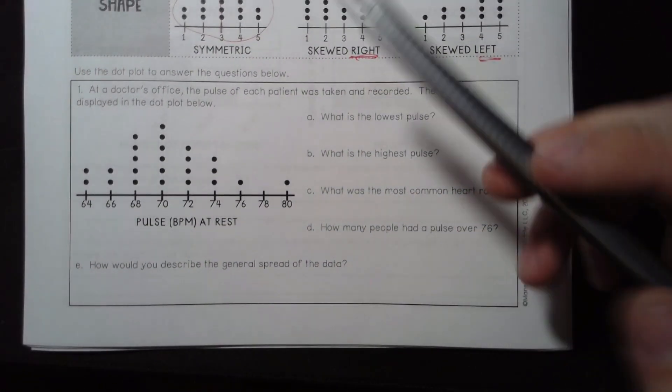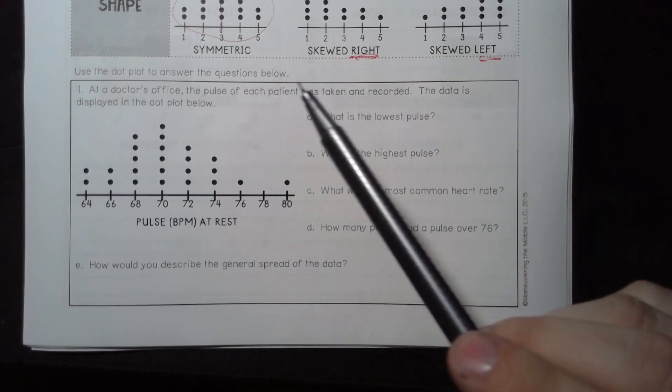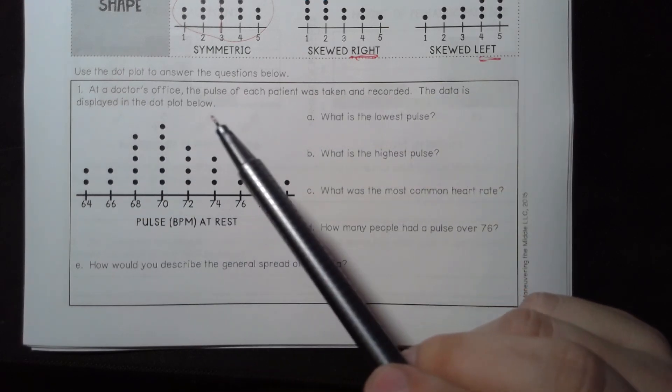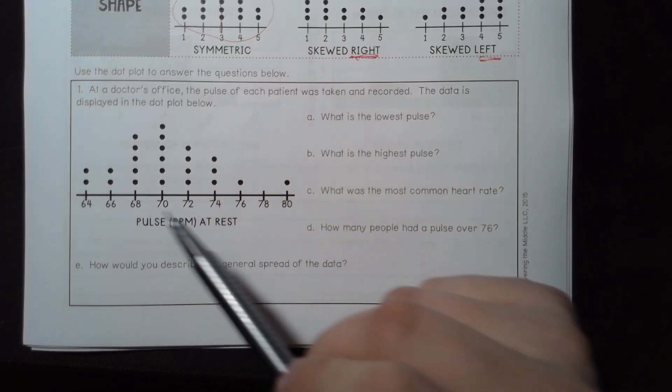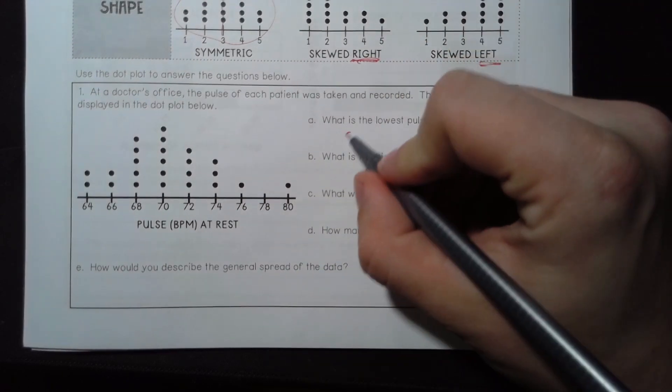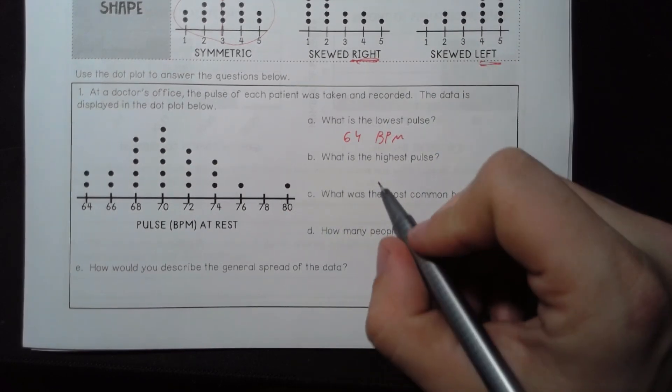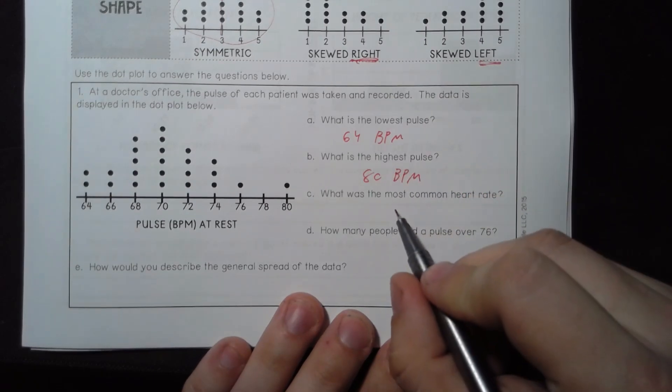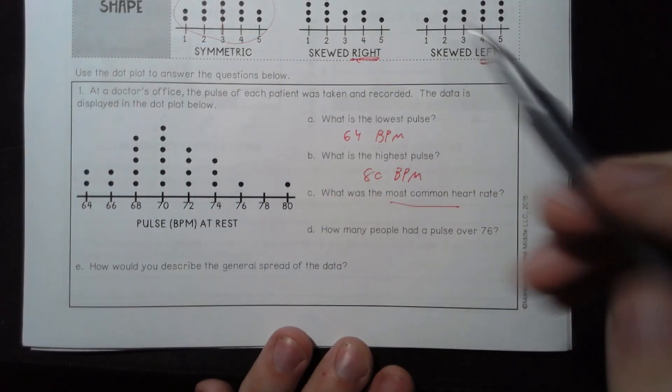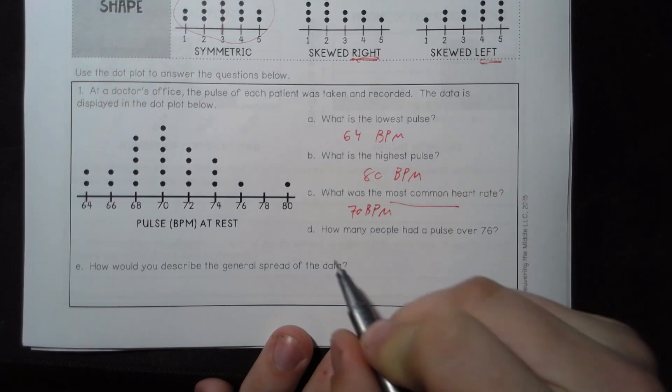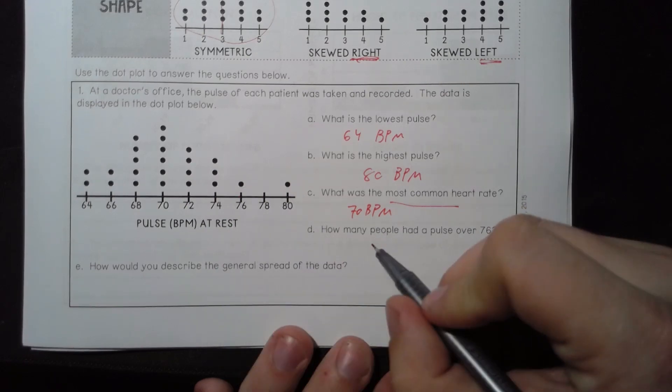Moving on. It asks us to use this dot plot to answer these questions. At a doctor's office, the pulse of each patient was taken and recorded. The data was displayed in the dot plot below. So, here we have it. What is the lowest pulse? That would be 64 beats per minute. What is the highest pulse? That would be 80 beats per minute. What's the most common? Well, most common, the one that shows up the most, that would be 70 beats per minute. How many people had a pulse over 76? Well, let's check. Oh, only one. One poor guy.